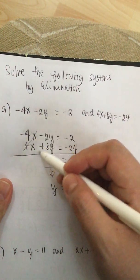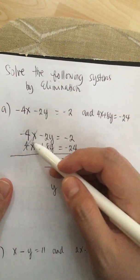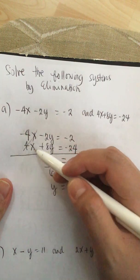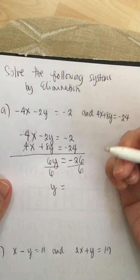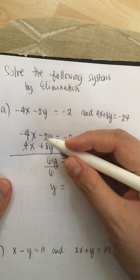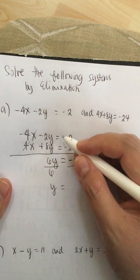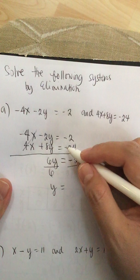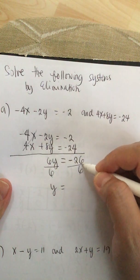So we combine these two equations and we get -4x + 4x is 0x. So we have -2y + 8y is equal to 6y. And then we combine -2 - 24 is equal to -26.